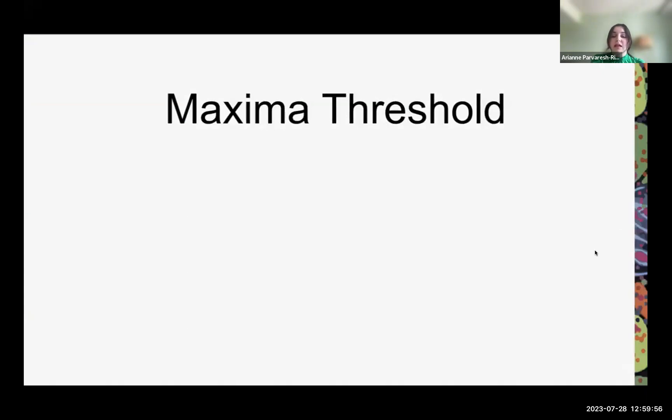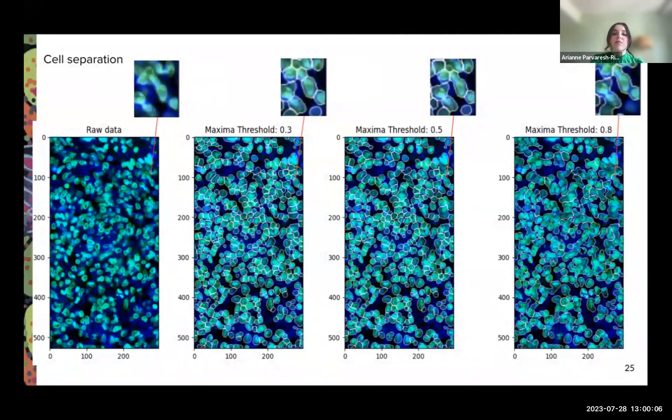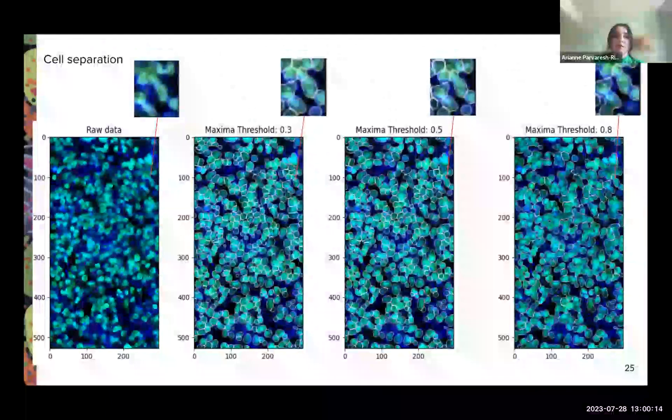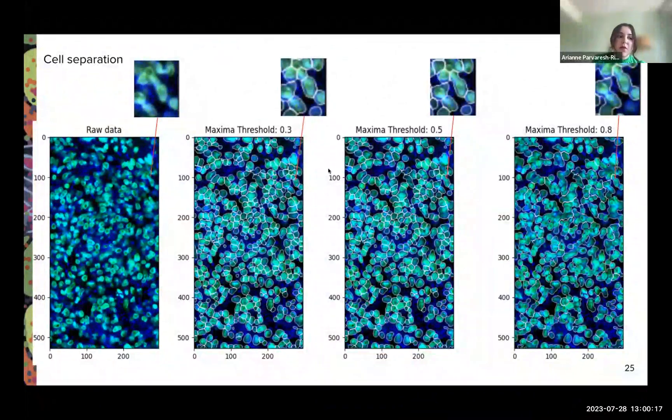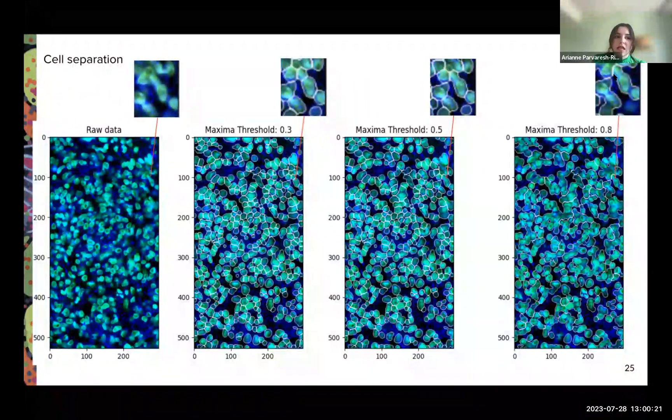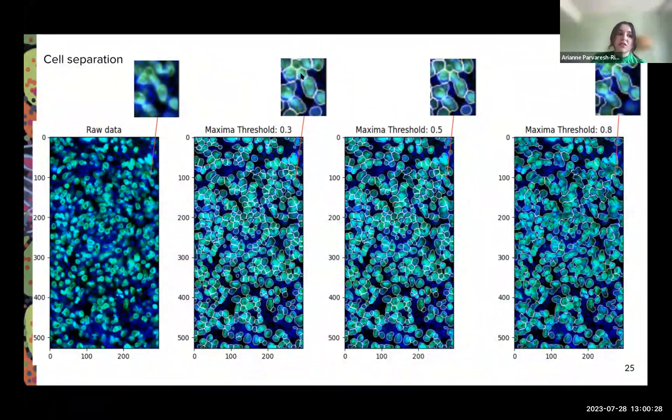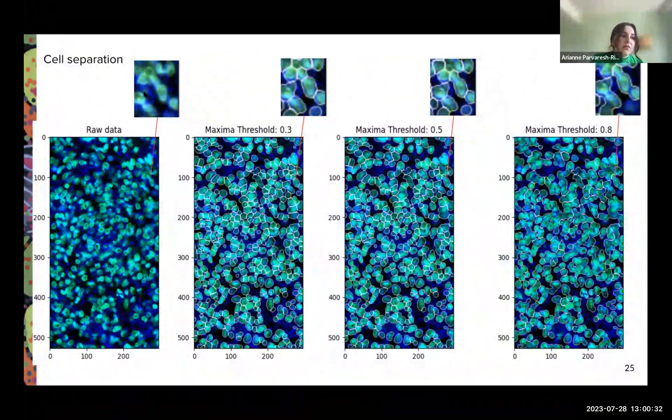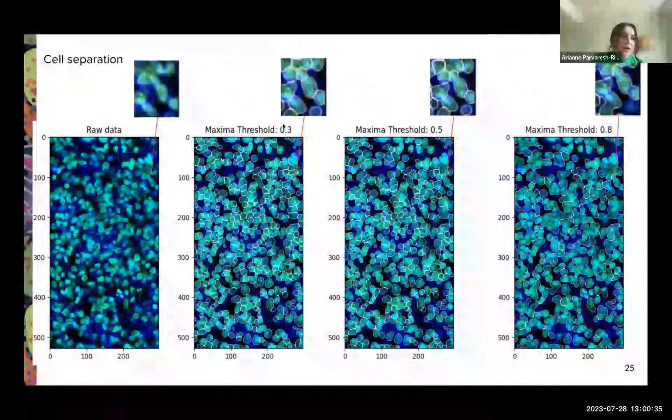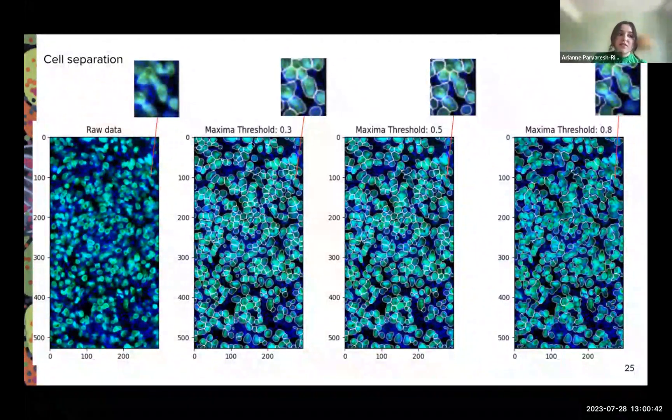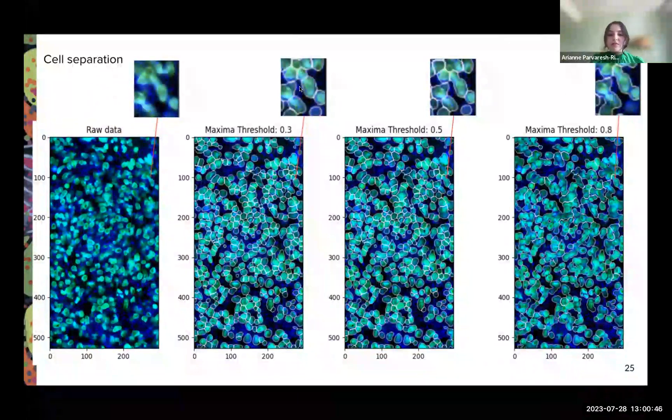The second parameter that I tested was maxima threshold. This parameter controls the model and considers what is a unique cell. A lower value results in more separate cells being predicted versus a higher value results in fewer cells being predicted. I tested three different values of 0.3, 0.5, and 0.8. A higher value results in more clusters of cells and less cells in general being detected in the sample, whereas as the values decrease, the nuclei are identified more accurately. Looking at the raw data, it can be seen how the cells are clustered. In this region, at higher values, they're considered one segment. However, as we decrease the value of maxima threshold, it performs more accurate segmentation with nuclei.